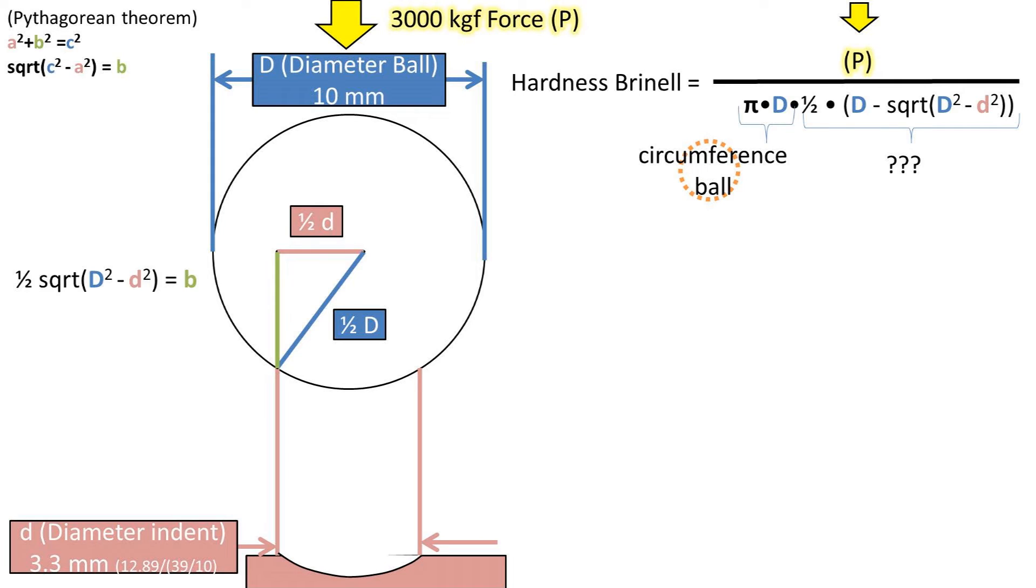Plugging these values into the Pythagorean theorem we get the other side length. Now if we subtract the side length from the diameter of the ball we get the indent depth. So this portion of the equation is solving for the indent depth into the clay from the bottom of the steel indent sphere.